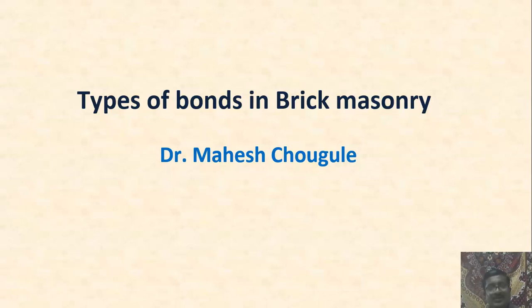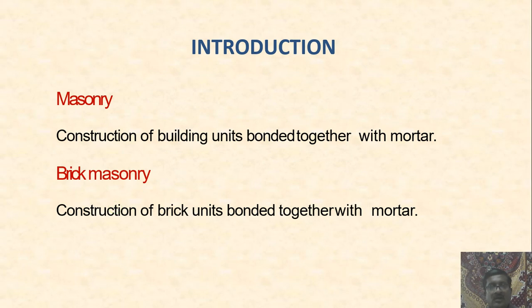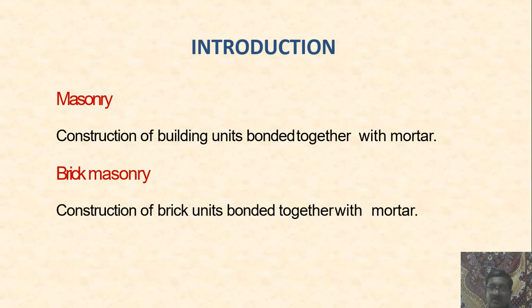Today in this session we are discussing types of bonds in brick masonry. Masonry is the construction of building units bonded together with mortar, using various blocks that may be stone or brick. In brick masonry, brick units are bonded together with mortar, which is made of fine aggregates with a binding material such as cement or another suitable material.